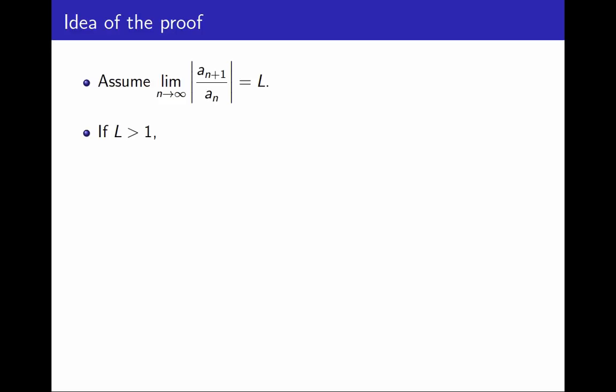The easier case is when this limit is greater than 1. As I said before, if this limit is greater than 1, it means that for large values of n, the terms are getting bigger in absolute value, not smaller. And if the terms are getting bigger, then the limit of the terms of the series cannot possibly be 0. And we know if the terms are not approaching 0, the series is divergent by the necessary condition. That's the easy case.